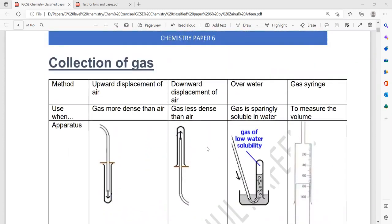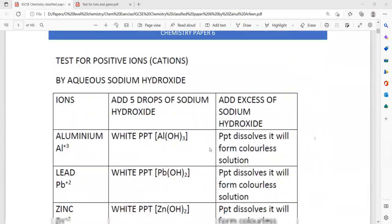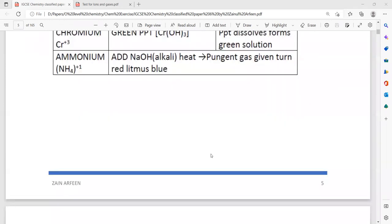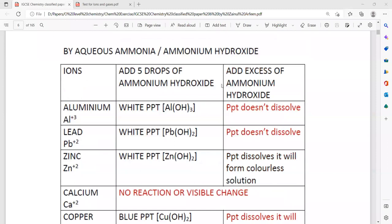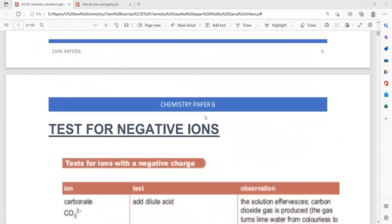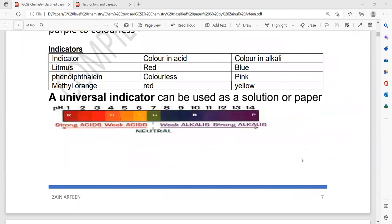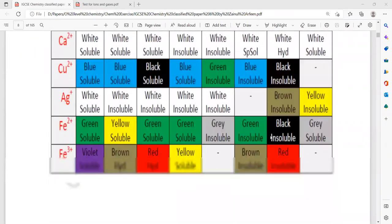Then what is the effect of adding sodium hydroxide in excess and a small amount. Same thing, what is the effect of adding ammonia solution or ammonium hydroxide in excess or in small amount. You have to memorize these tables, tests for the negative ions, the pH universal indicators, colors of different indicators in different mediums, and there are colored compounds as well.